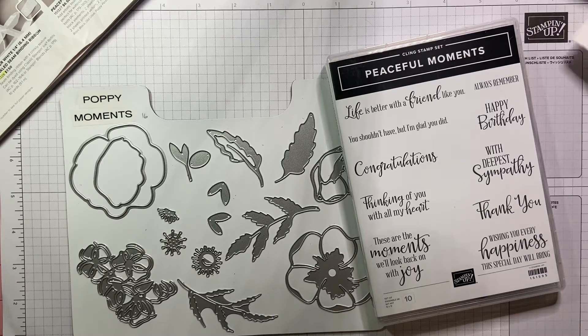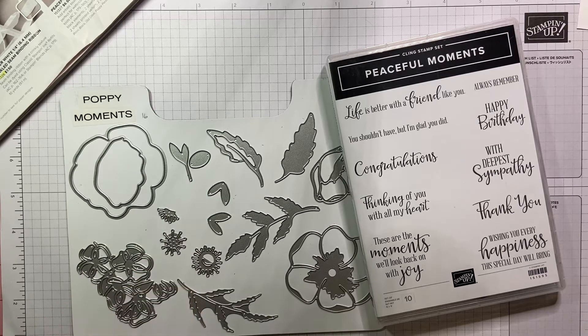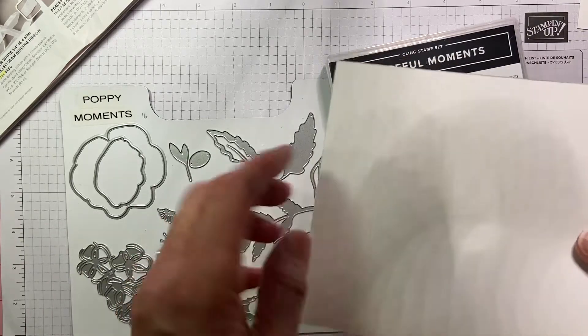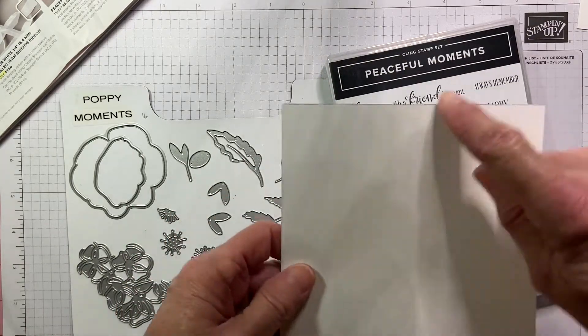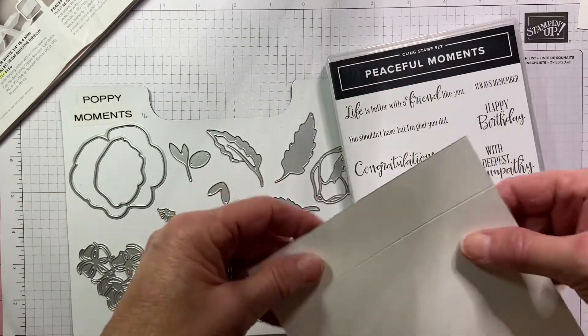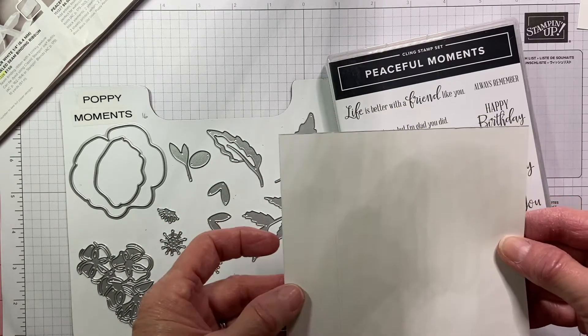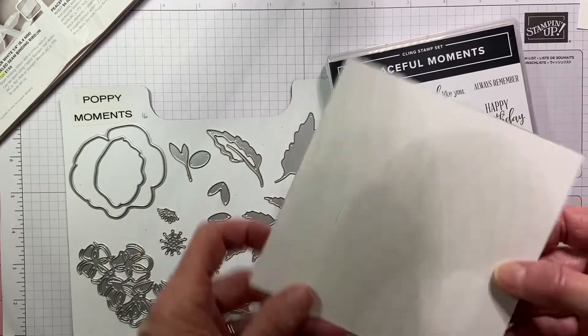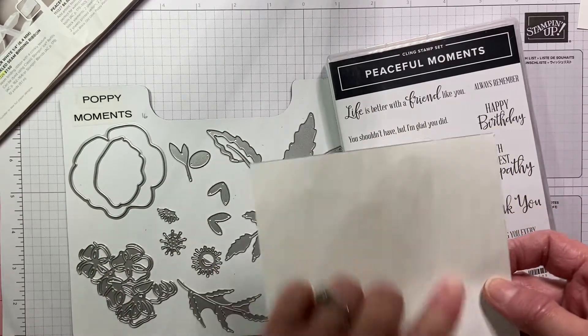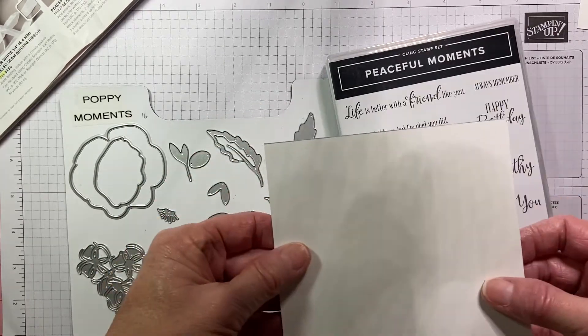The base card itself is a little different than typical. It's five and a half by five and a half, then it's going to get scored at four and a quarter on one side. One score, four and a quarter down that way. So that's the base.